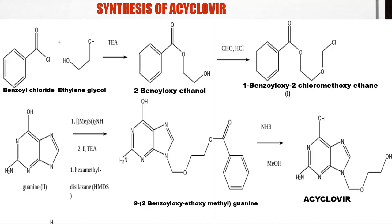Now let's look at acyclovir's synthesis — this is mentioned in your antiviral category. The synthesis starts with benzoyl chloride and ethylene glycol; triethylamine (TEA) is used as solvent. This forms 2-benzyloxyethanol. Next, formaldehyde is added in the presence of a catalyst to form an intermediate. Then guanine is used, leading to the intermediate 9-(2-benzyloxyethoxymethyl)guanine, and finally reaction with ammonia and methanol yields acyclovir. This is a very important synthesis — students, please memorize it.